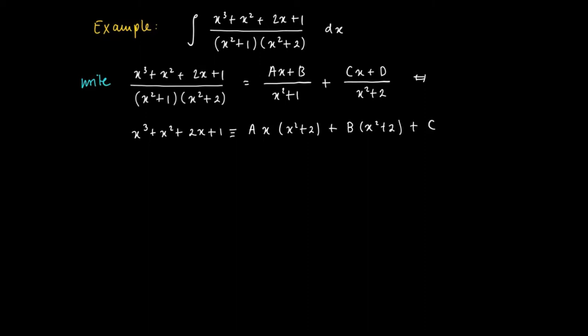This is just to make sure that Ax plus B divided by x squared plus 1, if we multiply the numerator and denominator by x squared plus 2 we get this expression. And the same can be done for the second one. So we get Cx times x squared plus 1 plus D times x squared plus 1.